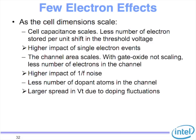Very proud of this innovation from our group. So we talked about a few things — air gap and planar high-K cell. What about few electron effects? As the dimensions scale, the cell capacitance scales, so you have fewer electrons stored per unit level. Every electron starts mattering more and more because it has a very high impact on VT, which is the domain we actually use to determine ones and zeros. The channel area scales and with the gate oxide not scaling, we have fewer electrons in the channel as well.